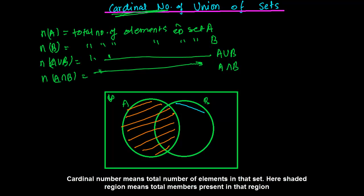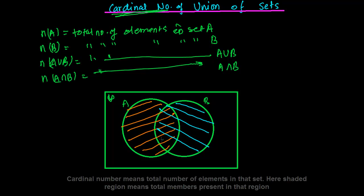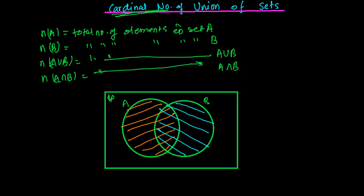The cardinal number of B means how many elements are there in the complete set B. And the cardinal number of A union B means the complete region — how many numbers are in A and how many numbers are in B combined. The region shaded with both colors represents my cardinal number of A union B.